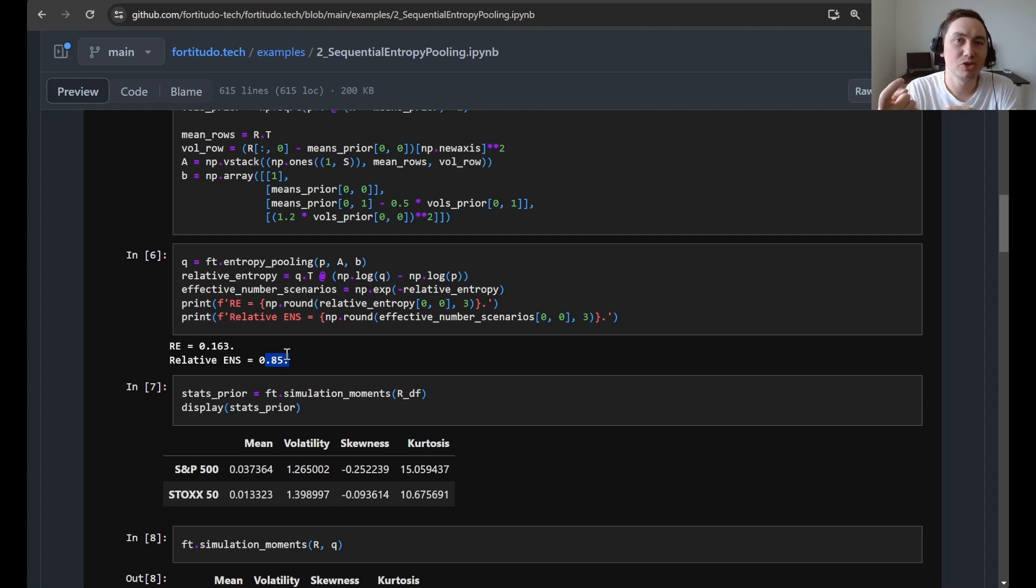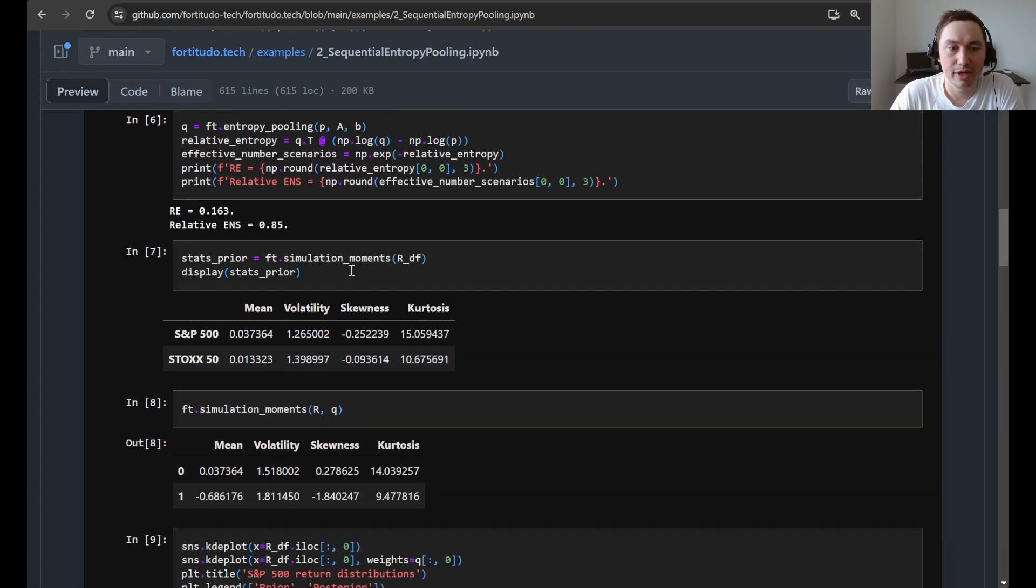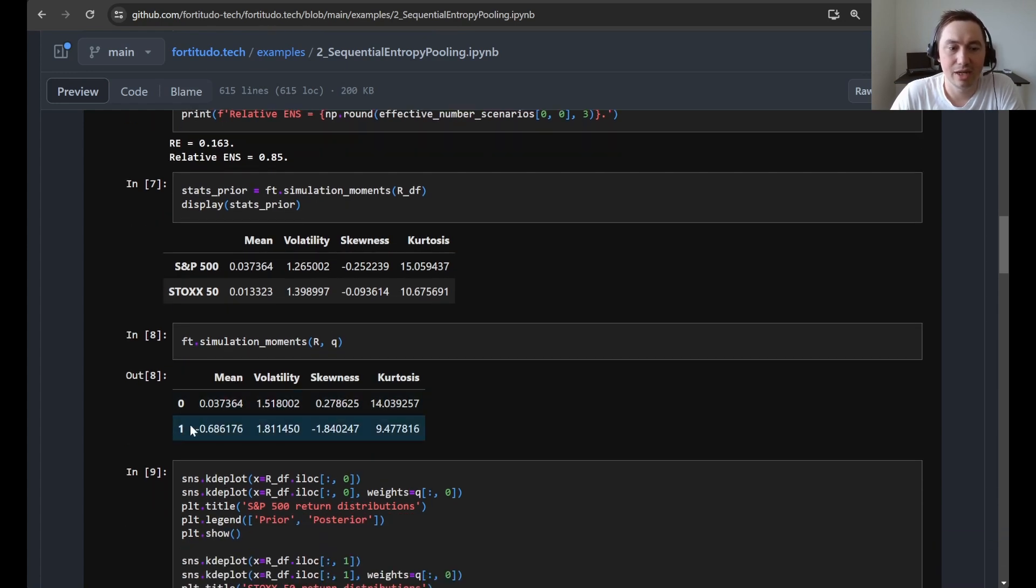So what we should see below where we use a sequential way of processing the entropy pooling views is that we will have a lower relative entropy and a higher effective number of scenarios. Here we just print the prior statistics so we can see what the mean and the volatility was initially and then we print here the posterior statistics just to see that we have actually implemented the views correctly.